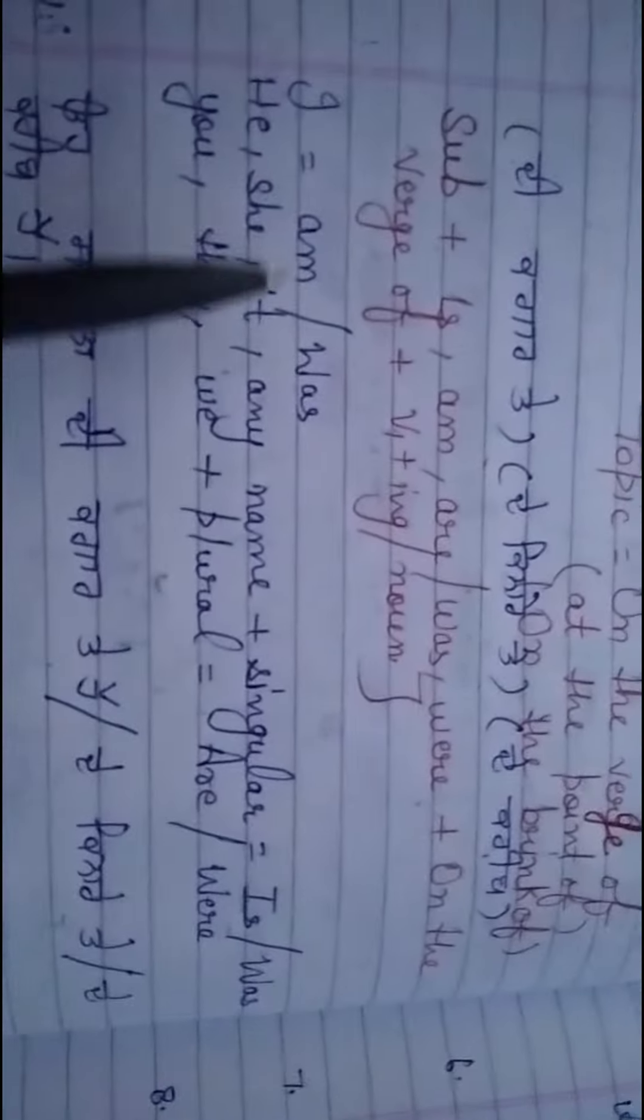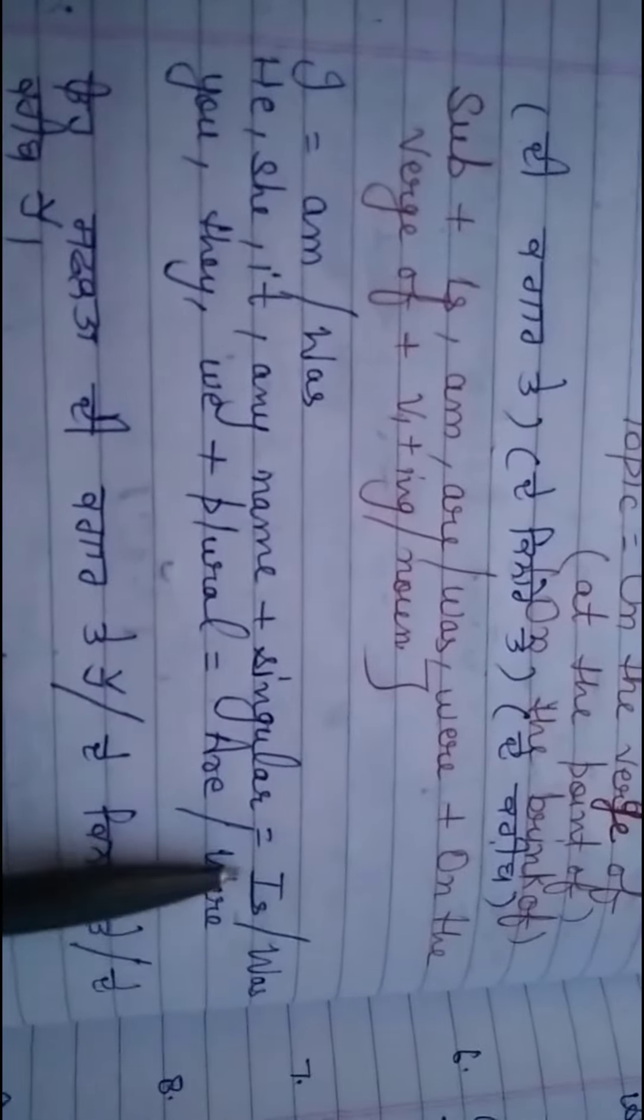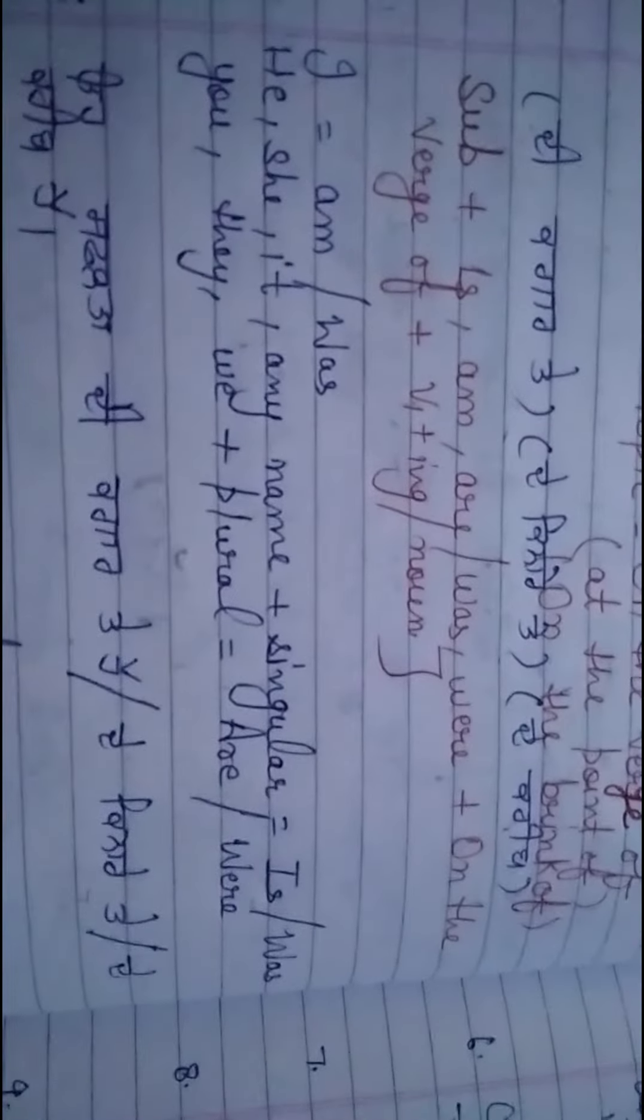The structure is easy. 'I am' is the helping verb used with I. In present tense, with he, she, or any singular name, 'is' is the helping verb. With you, they, we, or any plural, we use 'are' as the helping verb.